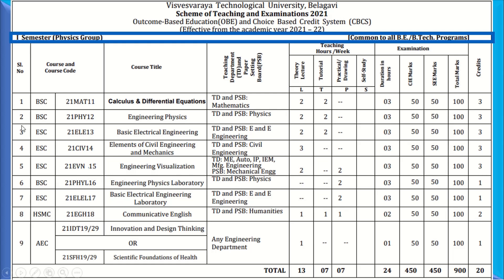You can see there are 9 subjects here. The columns show the course title, teaching department, number of lecture hours per week, tutorial hours per week, practicals if any, examination marks, and the last column — which is very important — the number of credits associated with each subject. At the bottom, there are 20 credits the student needs to earn in the first semester.